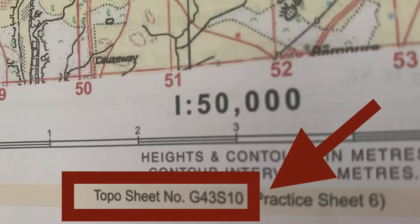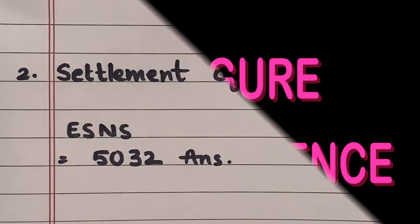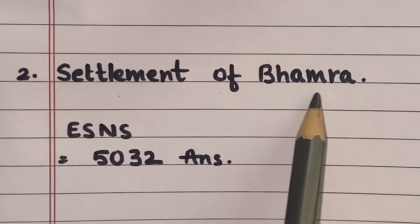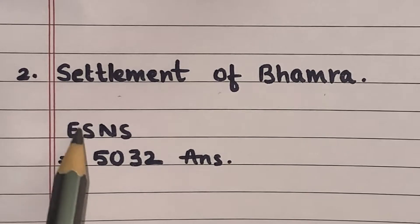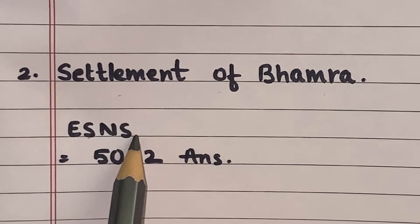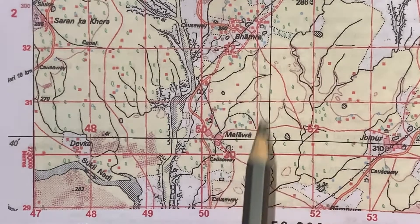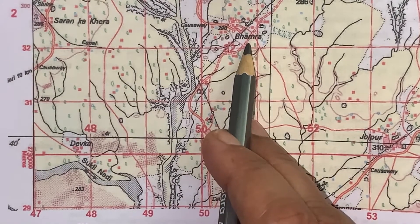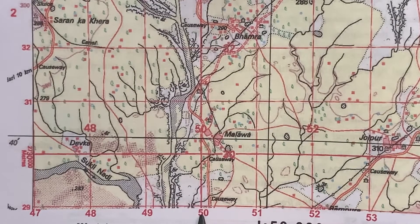Now I am taking another question from the second topo sheet of your syllabus, which is G43S10. Question 2: Give the 4-figure grid reference of the settlement of Bhamra. Here also I have written Easting followed by Northings. In the given map we will go to the grid where the settlement of Bhamra is located.